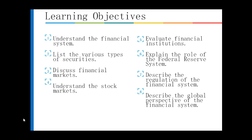Once you complete the chapter, you should understand the following objectives: We're going to understand the financial system, list the various types of securities, discuss the financial markets and understand the stock market. We're going to evaluate financial institutions and the role of the Federal Reserve System, describe the regulation of the financial system, and describe the global perspective of the financial system.